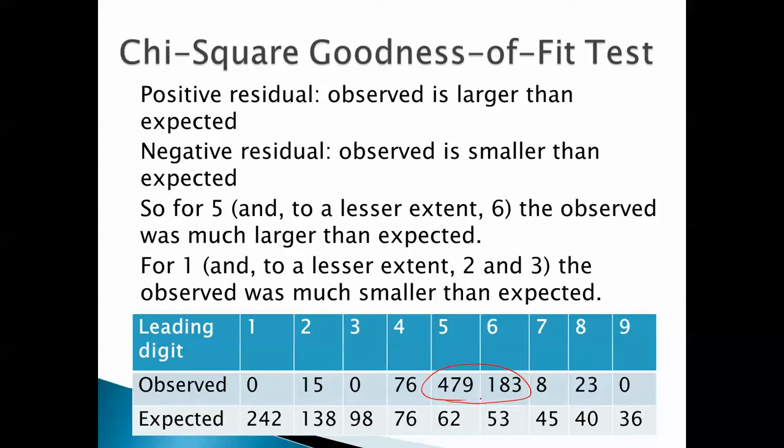Look. We observed this many fives and sixes. We expected that. We observed this many ones, twos, and threes, and we expected those. So yeah, those numbers were way off.